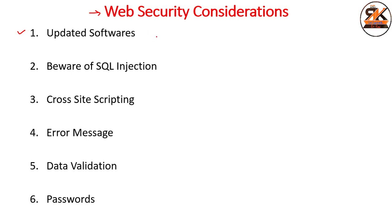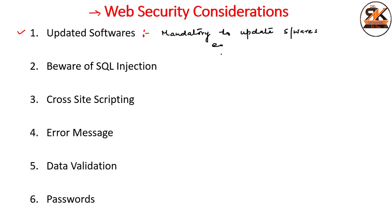The first consideration is updated software. It is mandatory that one should keep software updated, and it plays a vital role in keeping your website secure. Any software related to your website needs to be updated. It is mandatory to update software — for example, antivirus software.